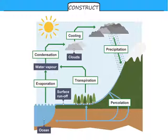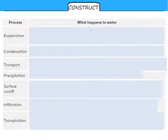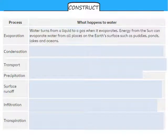Let us run through what happens to water during this water cycle. Evaporation is when water turns from a liquid into a gas when it evaporates. Energy from the sun can evaporate water from anywhere on the Earth's surface, places like puddles, ponds, lakes, and oceans. So the water is evaporated by energy from the sun and turns from a liquid into a gas.